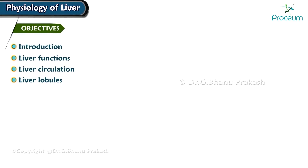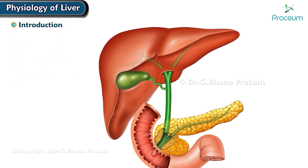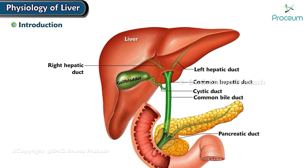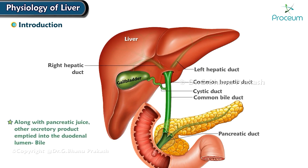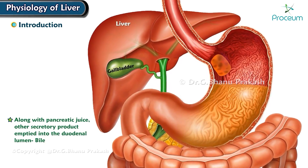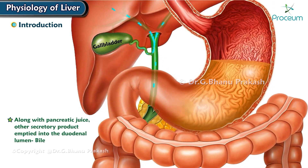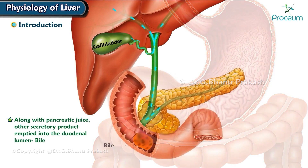Physiology of Liver Introduction. The biliary system includes the liver, the gallbladder, and associated ducts. Along with pancreatic juice, the other secretory product emptied into the duodenal lumen is bile.